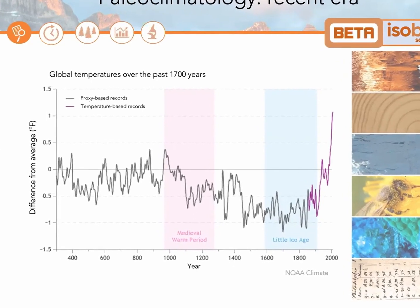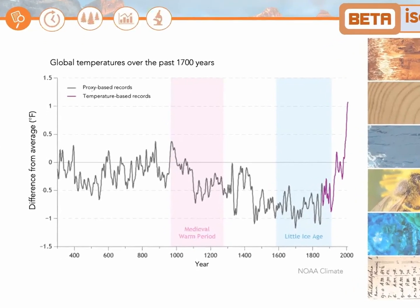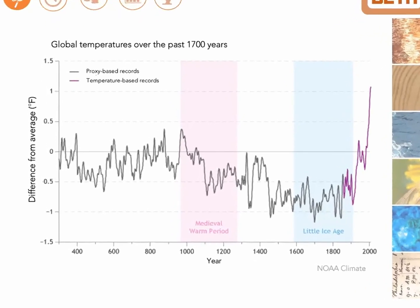On this plot, you can see temperature-based records from meteorological stations in purple, which extend to the late 1800s. This data has been expanded for multiple centuries using proxy-based temperature records shown in grey. From this, you can see that while recent global warming has been very extreme, compared to the last 1500 years,